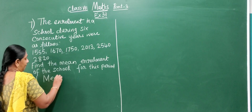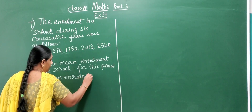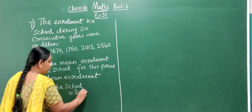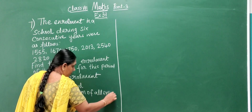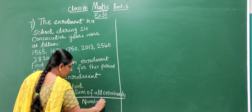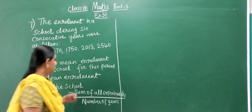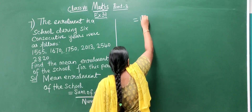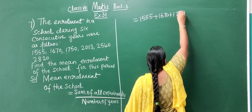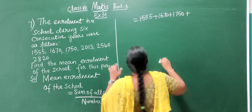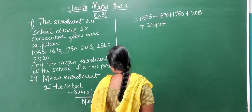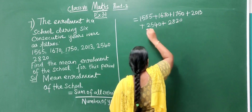Mean enrollment of the school equals sum of all enrollments divided by number of years. The sum is 1,555 plus 1,670 plus 1,750 plus 2,013 plus 2,540 plus 2,820, divided by 6.